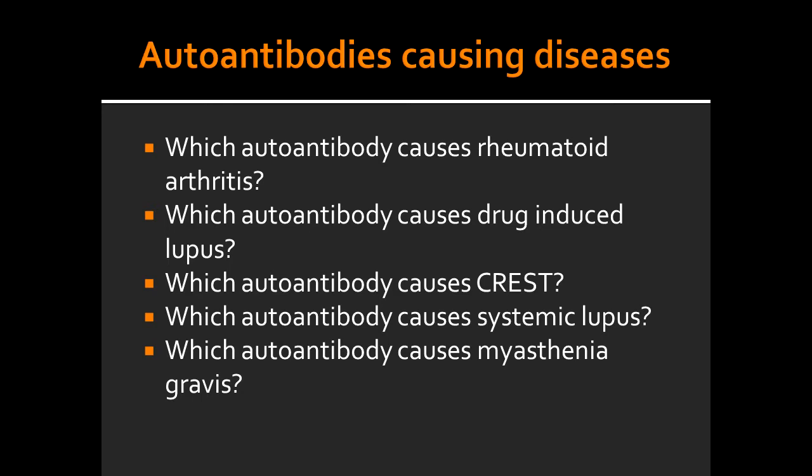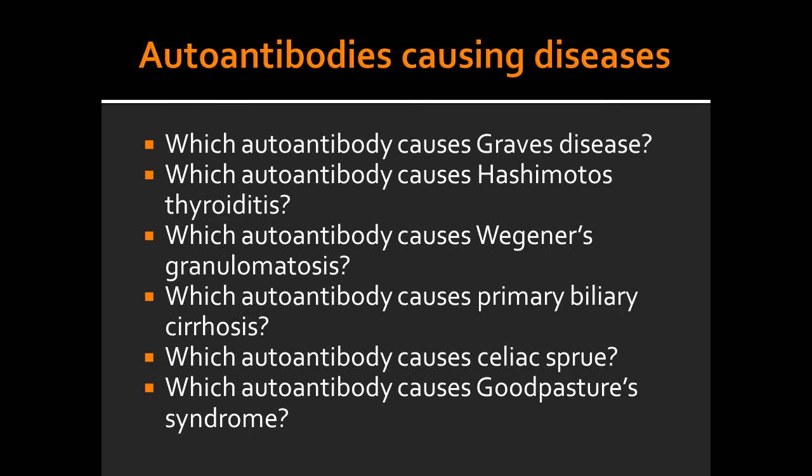Which autoantibody causes myasthenia gravis? Myasthenia gravis is caused by anti-ACH receptor. Which autoantibody causes Graves' disease? Graves' disease is caused by anti-TSH receptor.